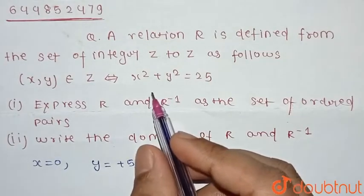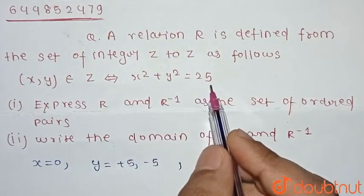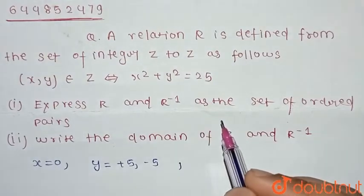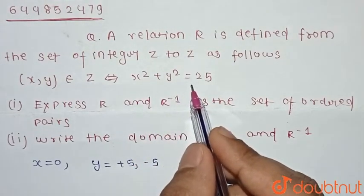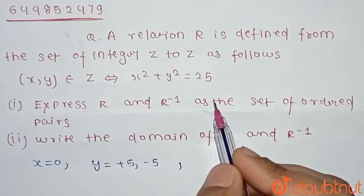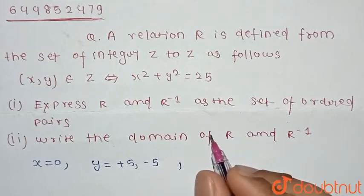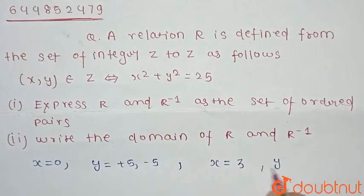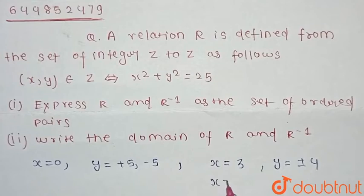For x = 2, y² = 25 − 4 = 21. Since 21 is not a perfect square, y is not an integer, so x = 2 is not valid. For x = 3, y² = 25 − 9 = 16. Since 16 is a perfect square, y = ±4. So for x = 3, y = ±4. Similarly, for x = −3, y = ±4 as well.